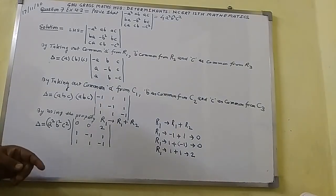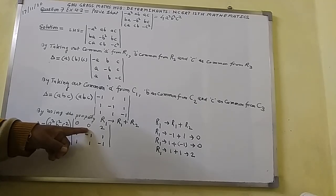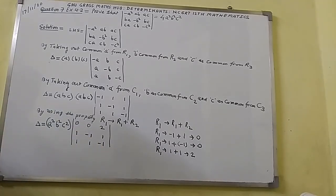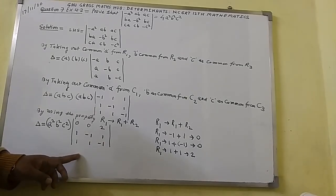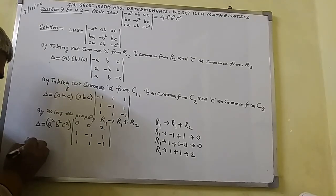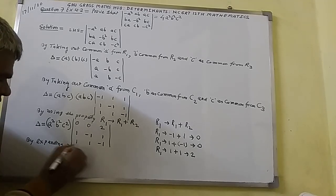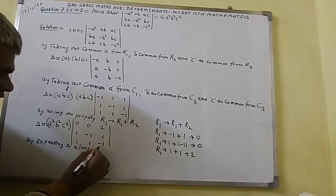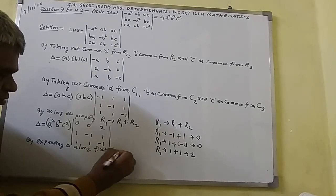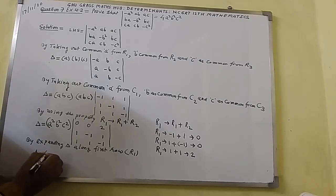So here you can see in the first row, the first element and second element are both 0. Therefore this determinant can easily be expanded by taking the first row. So here I shall write by expanding the determinant along R1, and we get A²B²C² as the factor outside.